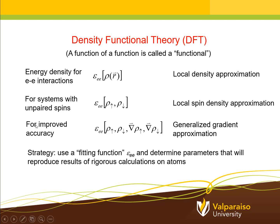For even more improved accuracy, and this is what VASP is able to take advantage of, we not only include the charge density at all points in space for the spin-up and spin-down electrons, but also the gradient of the charge density for both kinds of electrons. So it's not enough to just know what the charge density is at all points — we want to know how it's changing from point to point. These versions of density functional theory are collectively referred to as the generalized gradient approximation. The strategy is to use rigorous calculations on atomic systems to come up with a fitting function for the electron-electron interaction energy, determining parameters that best fit the results — without using any experimental data.